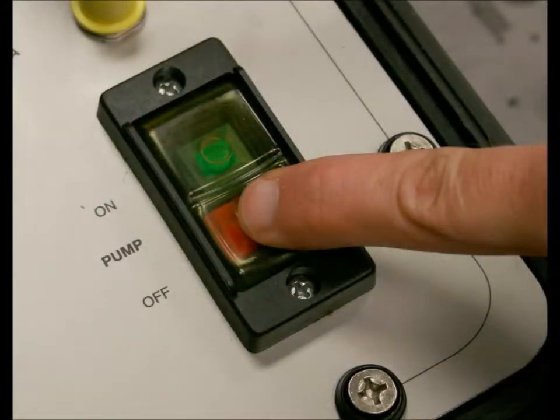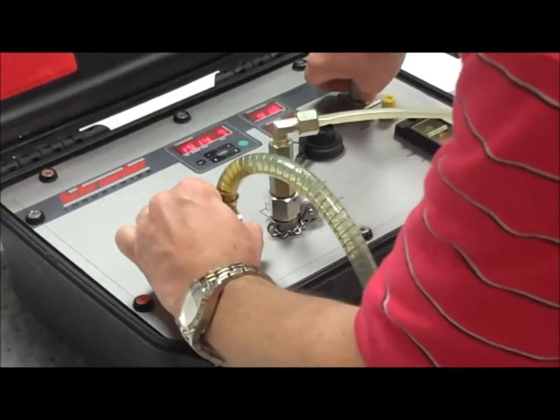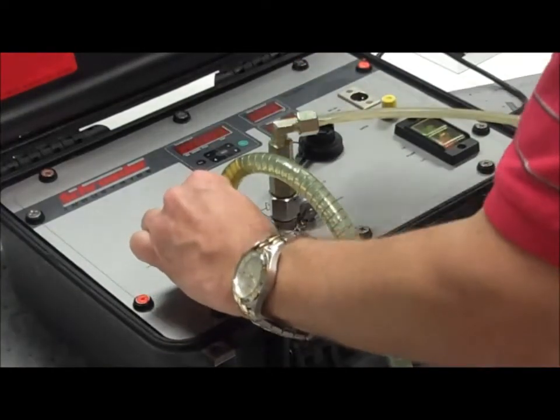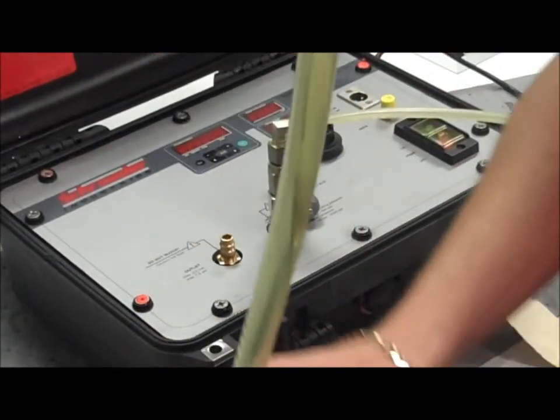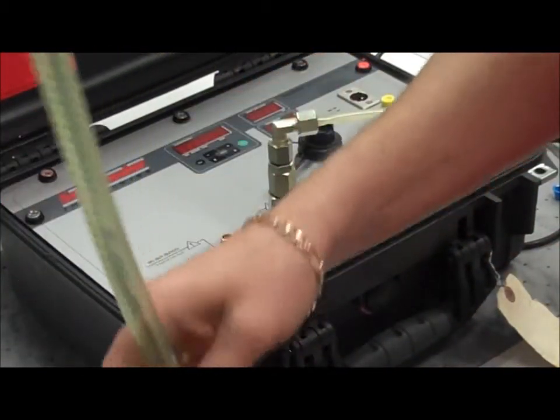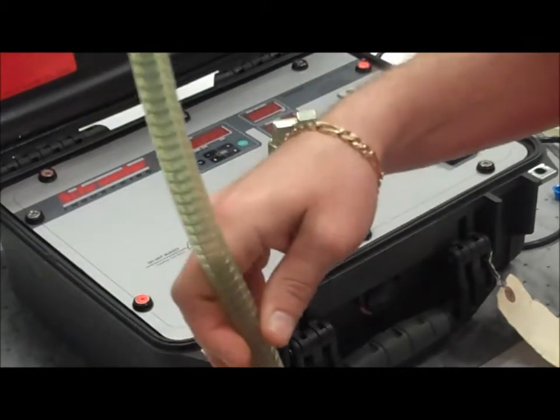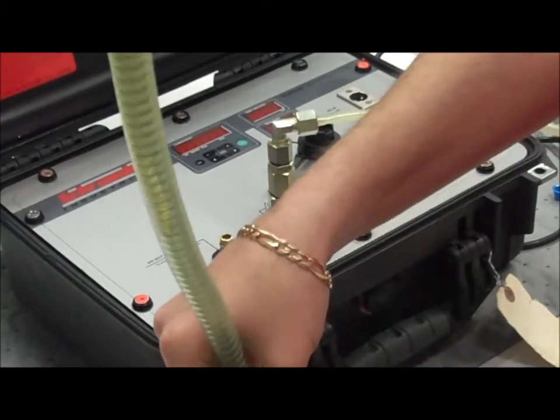Now you want to turn the TMU unit off and disconnect the hoses and the power from it, and then drain the outlet hose into the bottle. Make sure it's totally empty.